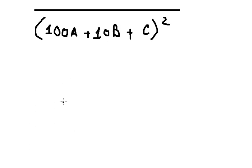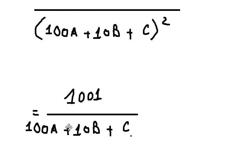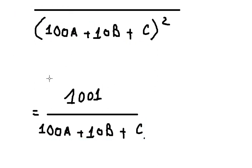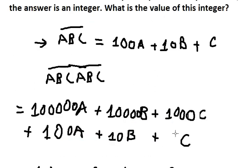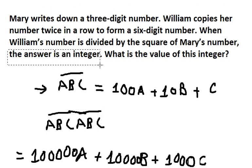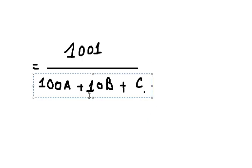We simplify this and we get a clean expression. This is a more elegant form. The reason for the factorization is clear here: the answer being an integer means this expression divided by Marie's number gives an integer.